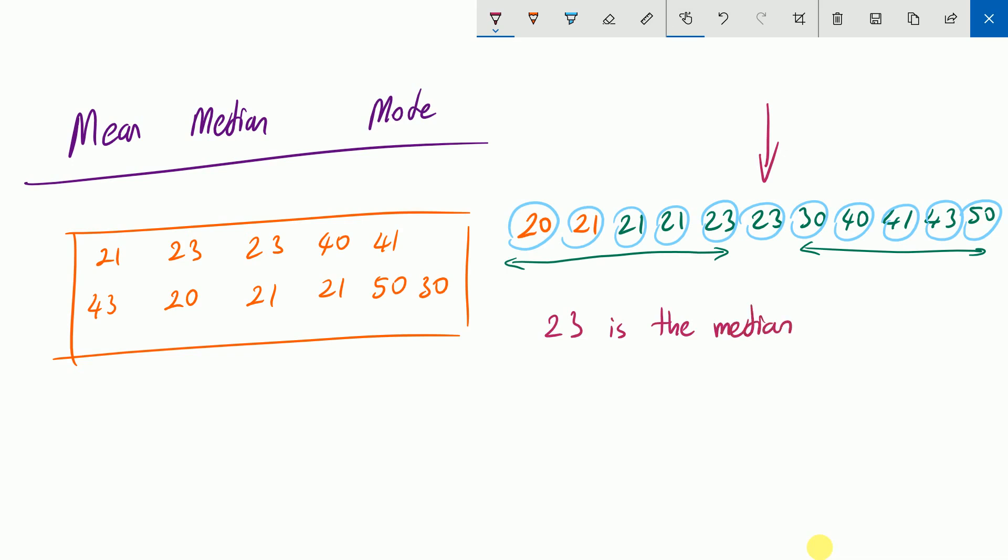What is mode? Mode is the number with the highest frequency, which means I see 21 three times. So the mode is 21.